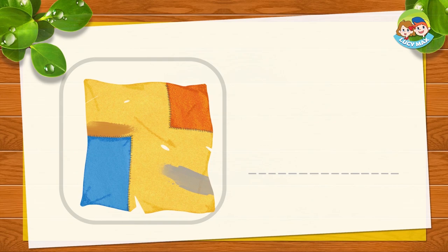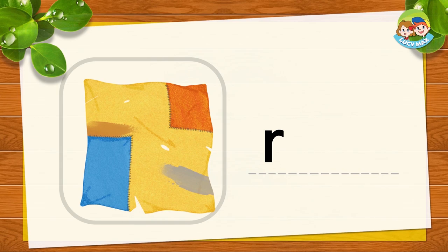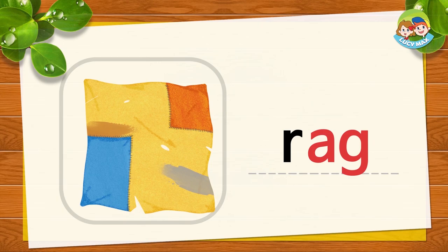The next picture is a rag. A rag is a cloth we use to clean. ER-AG together make rag. Now you try.